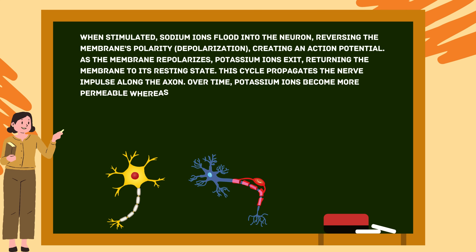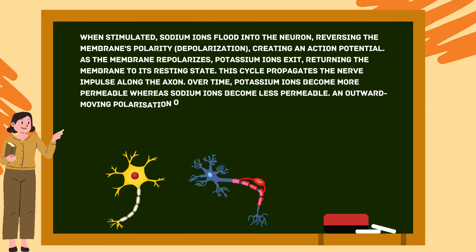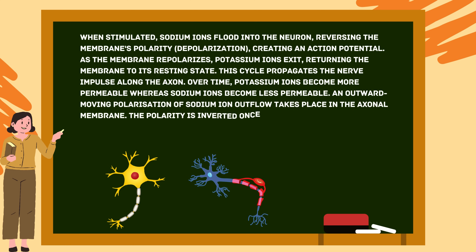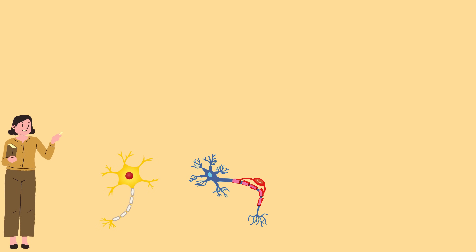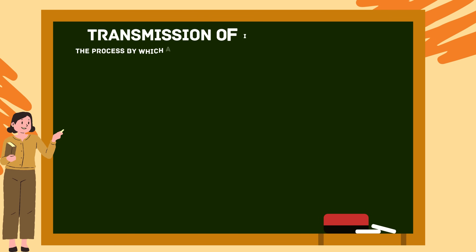Over time, potassium ions become more permeable while sodium ions become less permeable. An outward movement of potassium ions occurs in the axonal membrane, inverting the polarity once more. This series of actions is repeated along the axon, aiding in the conduction of the nerve impulse.